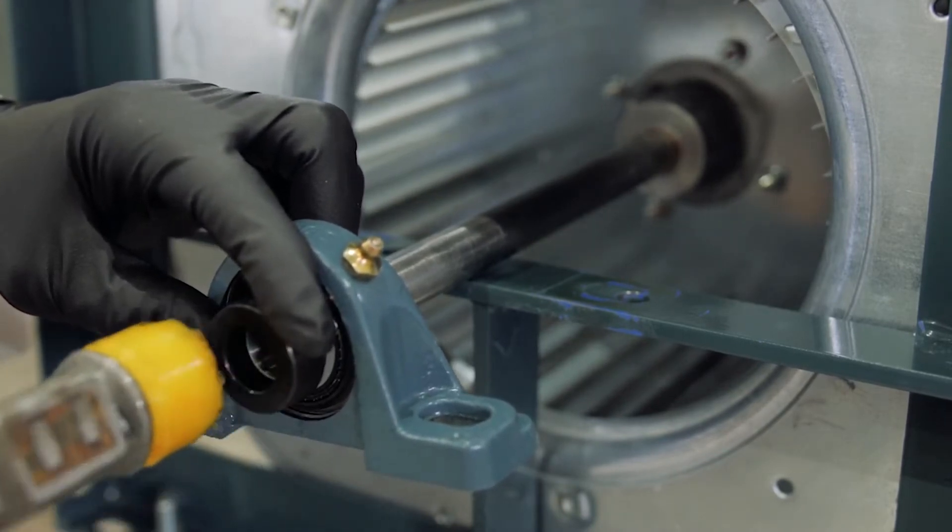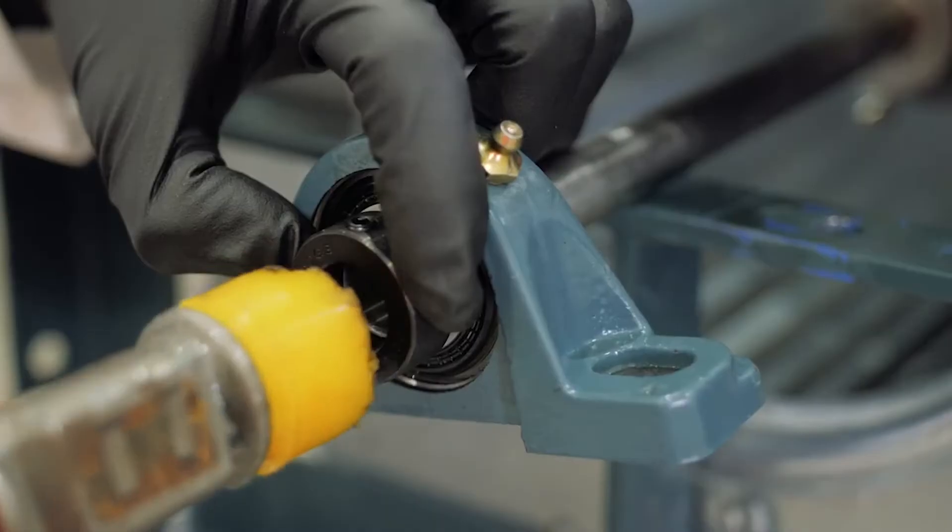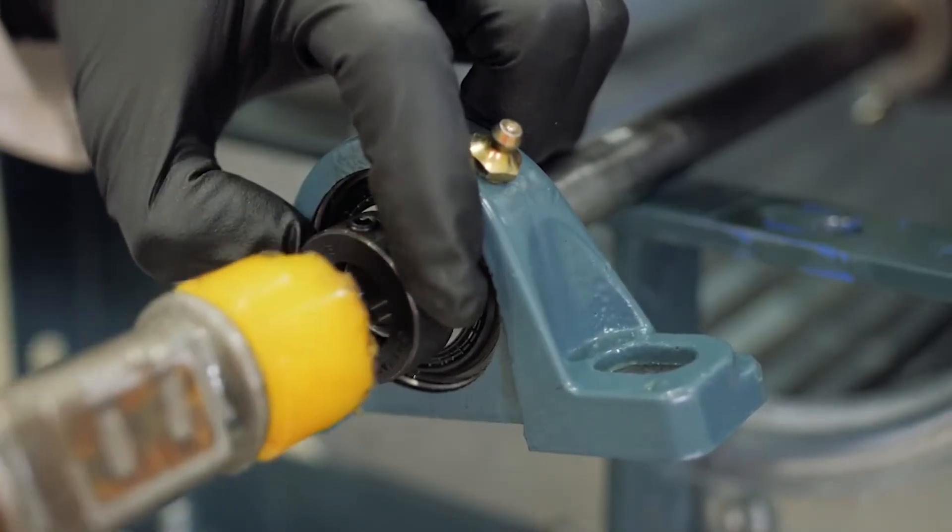For tighter fits, tap the face of the inner ring with a soft driver. Do not strike the housing as this may damage the bearing.